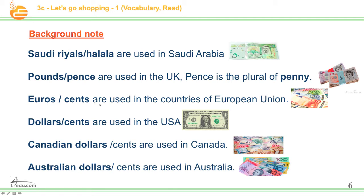Euros and cents are used in the countries of the European Union — for example, Sweden, Germany, and Spain. These are European Union countries. Dollars and cents are used in the USA — United States of America. We also have Canadian dollars and cents used in Canada; the Canadian dollar is different from the American dollar. And Australian dollars and cents are used in Australia.